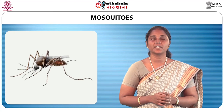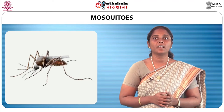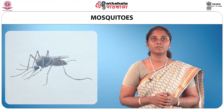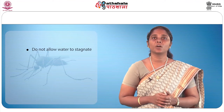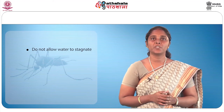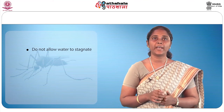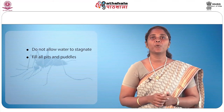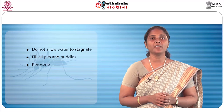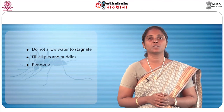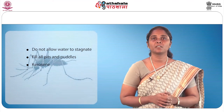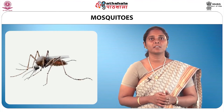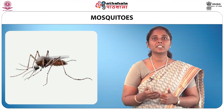Mosquitoes transmit diseases such as malaria, filariasis and yellow fever, and their life cycle begins in water. Do not allow water to stagnate in and around the hotel premises. Repair and fill all pits and puddles, cover drains, and pour kerosene to prevent larvae from growing into adult mosquitoes. An eco-friendly method is to place water around the property to allow mosquitoes to lay eggs, then discard the water before the eggs develop.